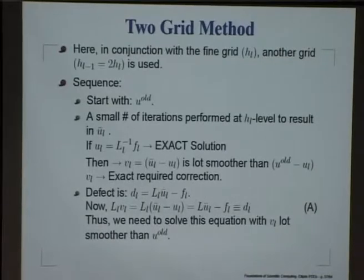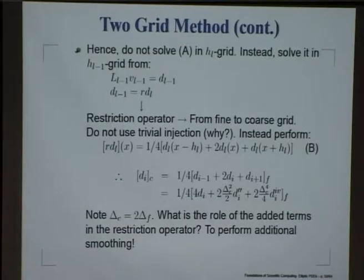We started off working with a fine grid hL. Now, we have exhausted all possible potential benefit at the fine grid, so we migrate to the next grid, the hL-1 grid, and that is where we want to solve for this exact correction. We are looking for the exact correction vL, but instead of working at hL grid, we went over to the hL-1 grid because we have exhausted all positive benefits of hL grid.